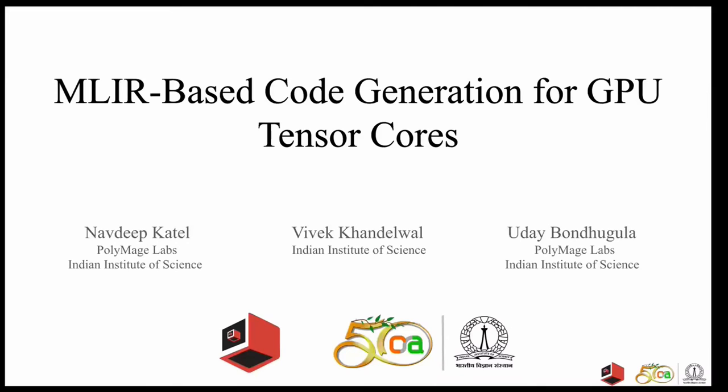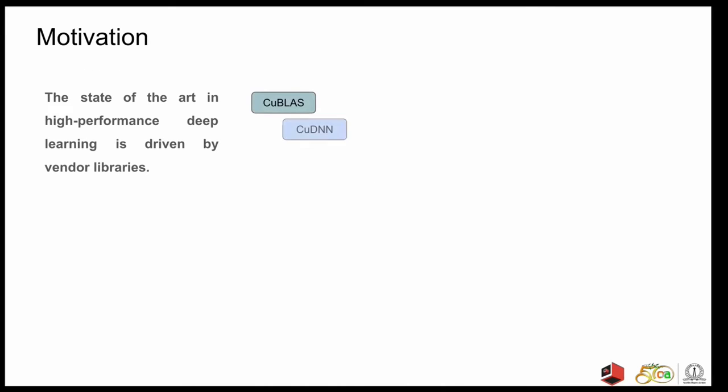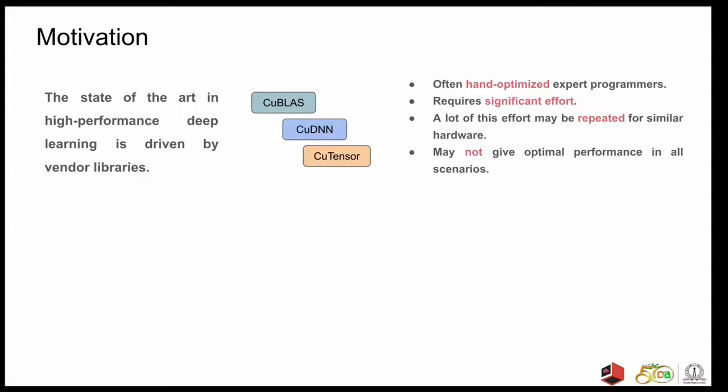Hi everyone, my name is Navdeep and I'll be talking about our work titled MLIR-based code generation for GPU Tensor Cores. We'll start off with the motivation for our work. State of the art in high-performance deep learning is primarily driven by highly-tuned libraries like cuBLAS, cuDNN, and cuTensor. These libraries are often hand-optimized and tuned by expert programmers using low-level languages and models and often require significant amount of effort. A lot of this effort may need to be repeated for similar hardware and this may not give optimal performance in all scenarios.